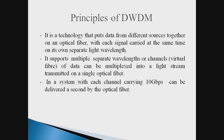DWDM supports multiple separate channels or wavelengths of data that can be multiplexed in the light streams from the transmitter on a single optical fiber. In a system where each channel carries 10 Gbps, this can be delivered by a second bias optical fiber.